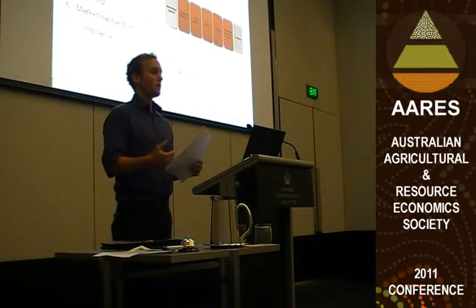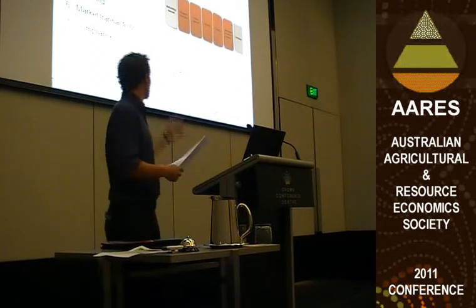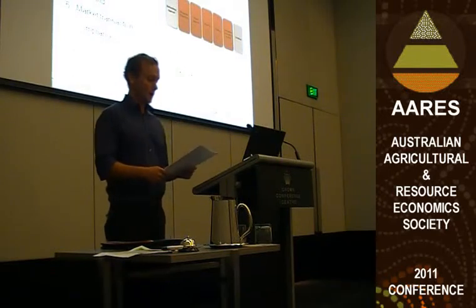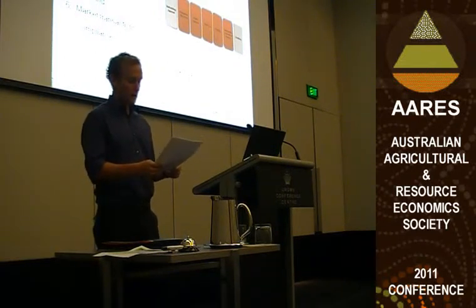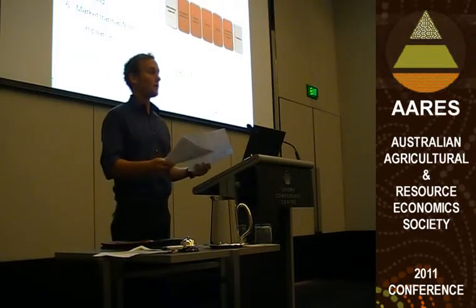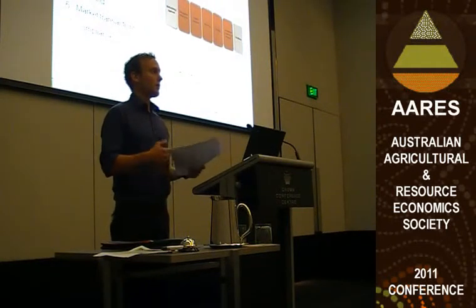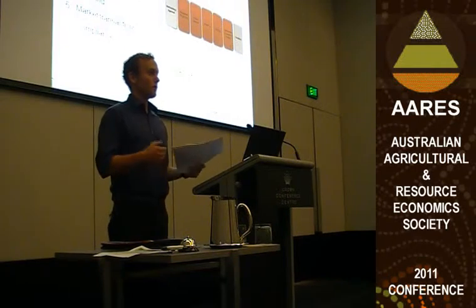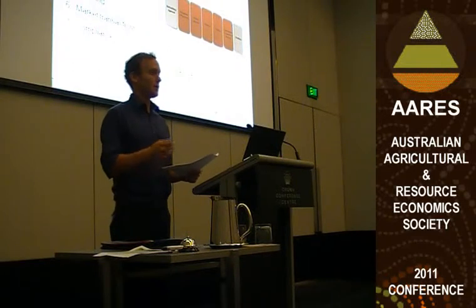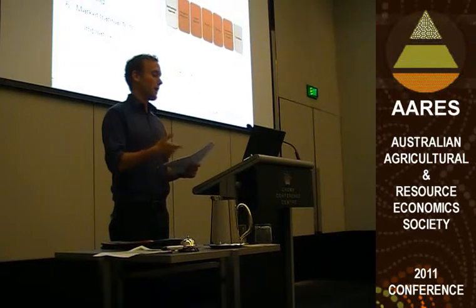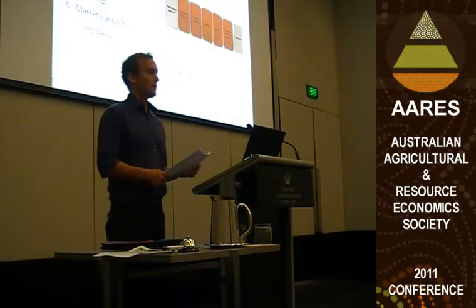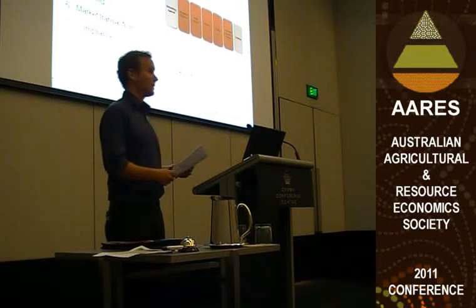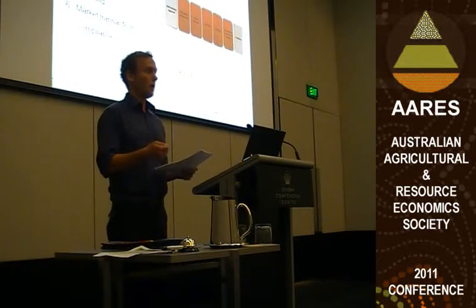Thinking about the costs involved in actually participating in this market: this figure, produced by the Department of Climate Change, shows the steps involved in producing an offset credit, and each one of these steps entails further costs. To begin producing offset credits, the landholder must first select the relevant methodology, become a registered entity, have a project approved by the scheme administrator, and then undertake annual or some form of reporting. Then once the project has been approved and implemented, the landholder must navigate the relatively foreign and complex carbon markets to actually generate income from their offset permits. There may also be additional costs associated with audits and other compliance mechanisms imposed by the scheme regulator.